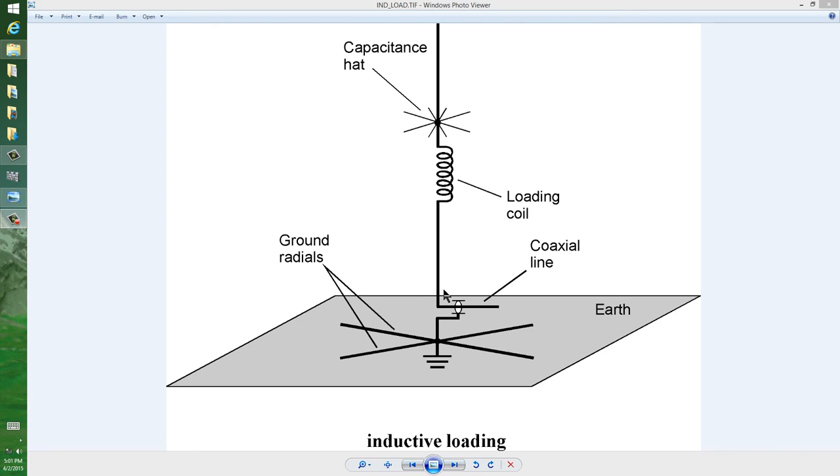But say at 40 meters, a standard quarter wavelength vertical would be 33 feet high. You could shorten that to maybe 20 feet by using a scheme like this and still get just about the same bandwidth that you would normally with a 33-foot element. That's just an example of inductive loading.